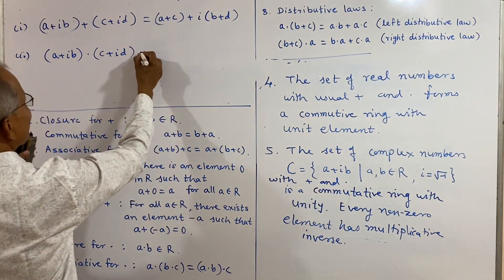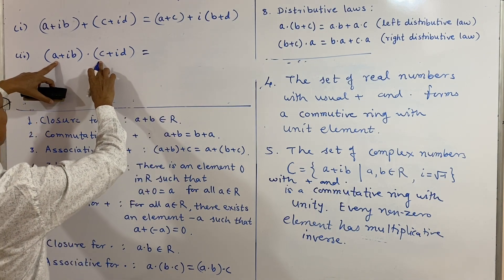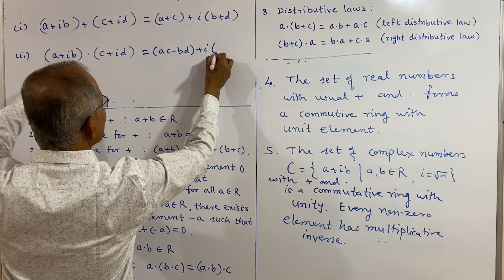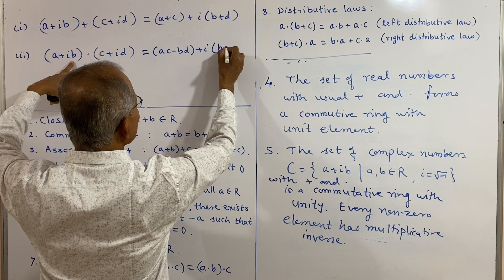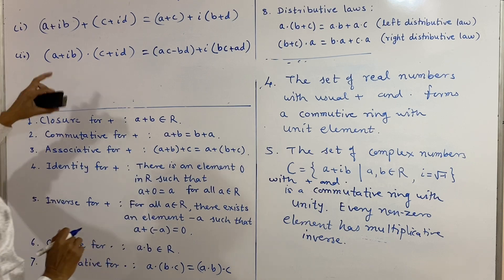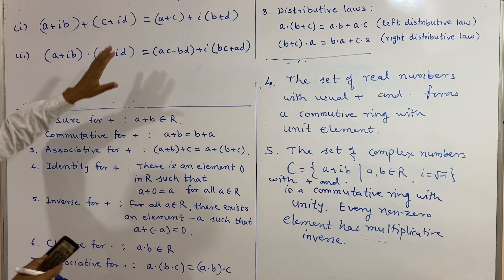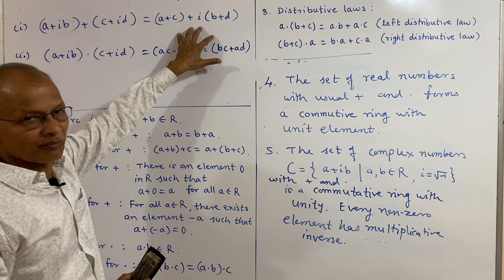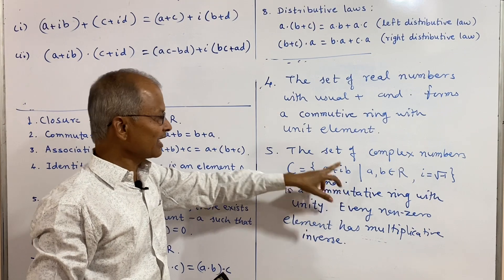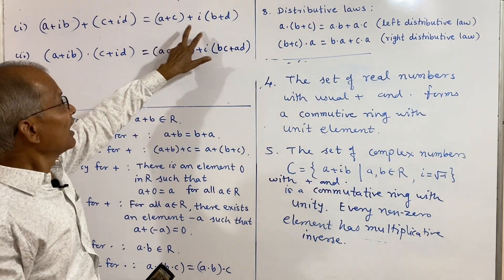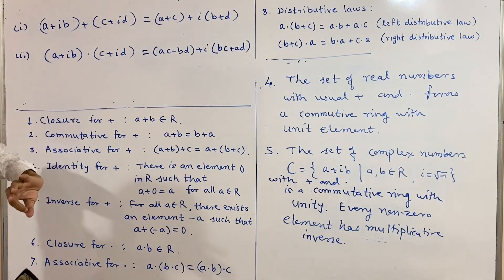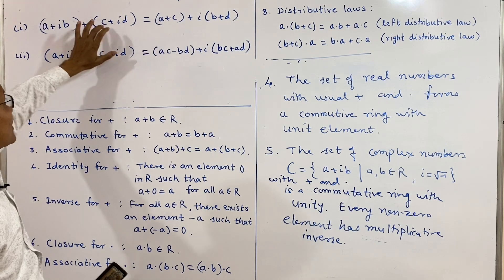Under this multiplication definition, the product (ac minus bd) + i(bc + ad) is of the form real part plus i times imaginary part, so it is again a complex number. Similarly, the sum (a + c) + i(b + d) is a complex number since a, b, c, d are all real numbers. Therefore, closure property is satisfied for both addition and multiplication.